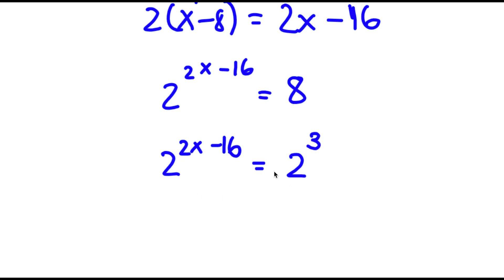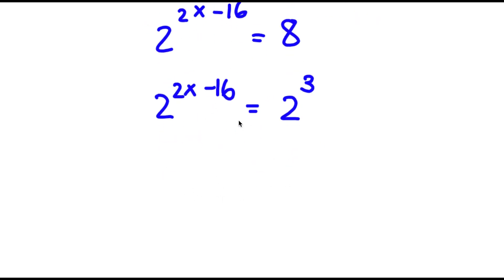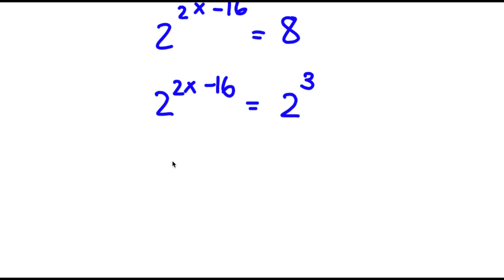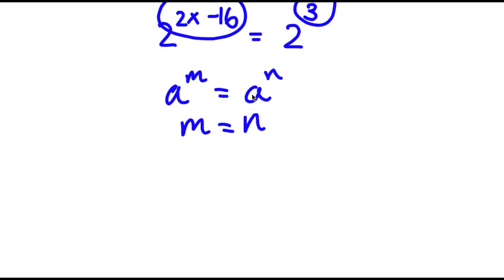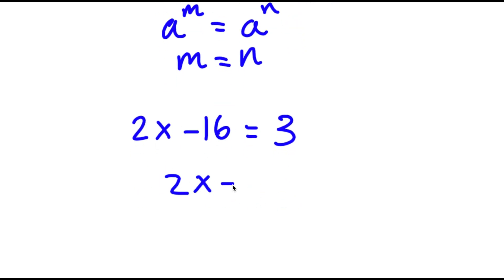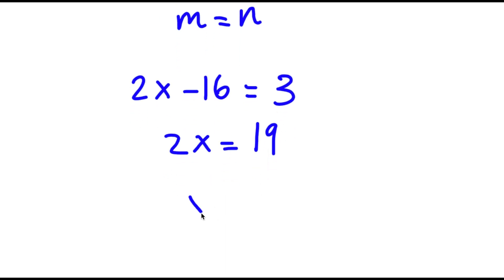Now these two bases are the same. The reason we did that is because if I have something in the form a to the power of m is equal to a to the power of n, this means that m is equal to n. So in this case, 2x minus 16 is equal to 3, meaning 2x is equal to 19, and x is equal to 19 over 2.